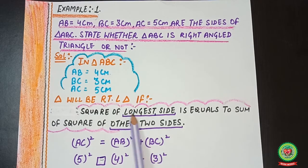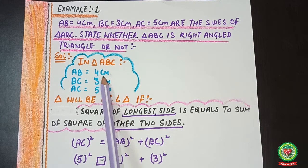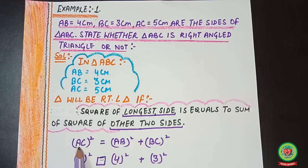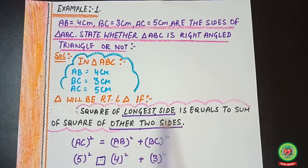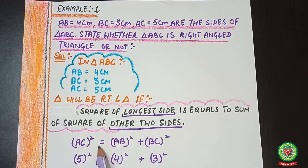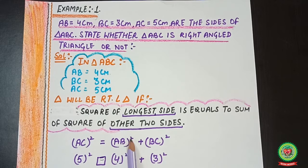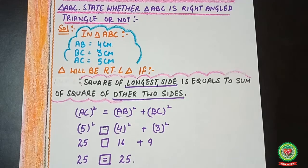Which is the longest side? Looking at 4, 3, and 5 — it is 5, so the longest side is AC. We write: AC² = AB² + BC². These are the remaining two sides.